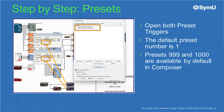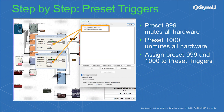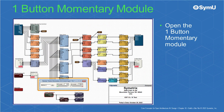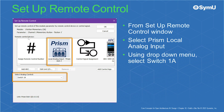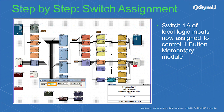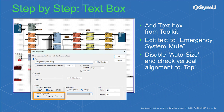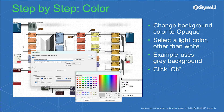Open both preset triggers. The default preset number is 1. Note that presets 999 and 1000 are available by default in Composer. Preset 999 will mute all hardware; preset 1000 will unmute all hardware. Assign preset 999 and 1000 to the preset triggers. Now open the one-button momentary module. Right-click the on button and choose setup to remote control. From the setup remote control window, select the Prism local analog input. Then using the drop-down menu, select switch 1a. Switch 1a of the local logic inputs is now assigned to control the one-button momentary module.